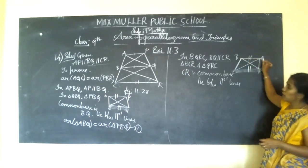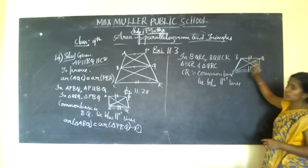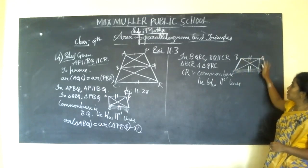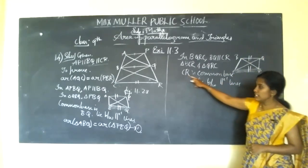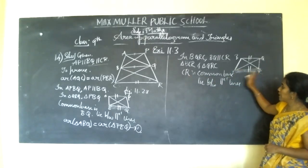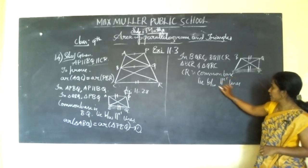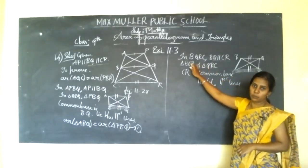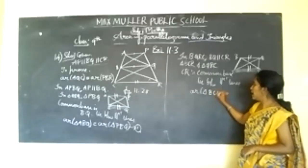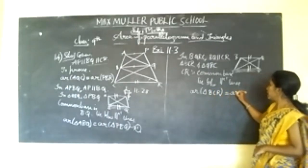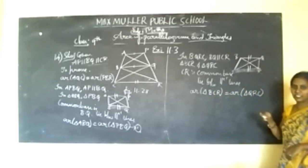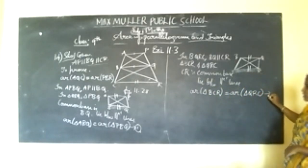In BQRC, BQ is parallel to CR. In triangles BCR and QRC, CR is the common base. Whenever you have a common base and the triangles lie between parallel lines, you can conclude the areas of triangles are equal. So, area of triangle BCR is equal to area of triangle QRC. Call this equation 2.